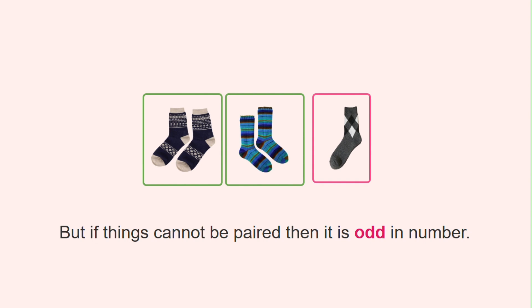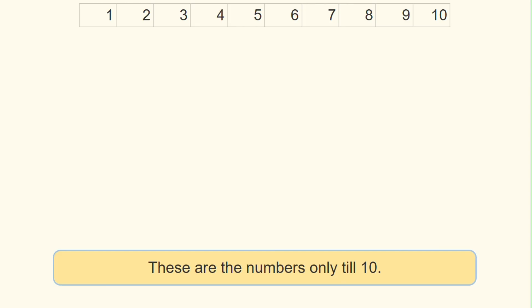If things can be paired, then it is even in number. But if things cannot be paired, then it is odd in number. These are the numbers only up to ten.